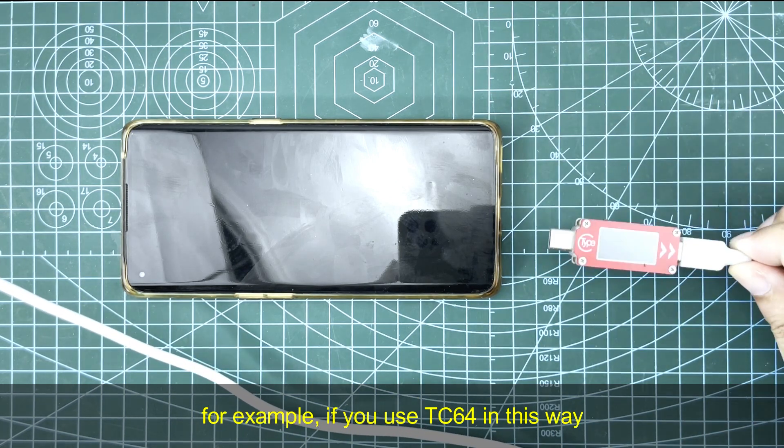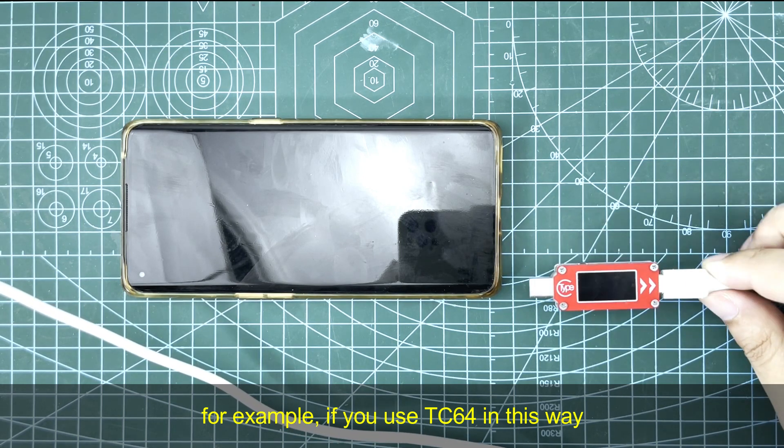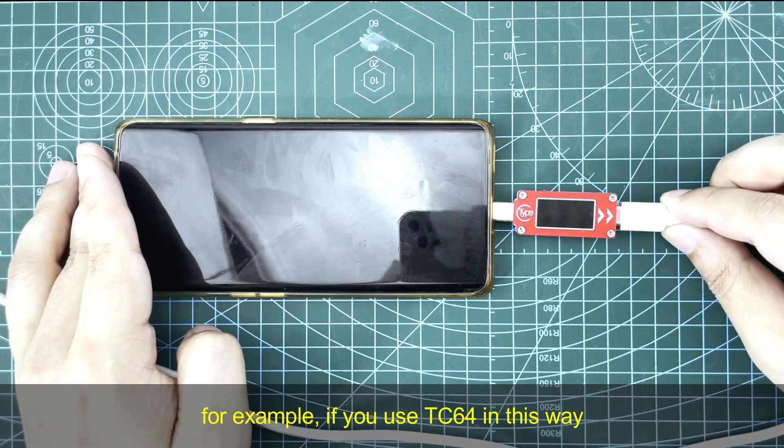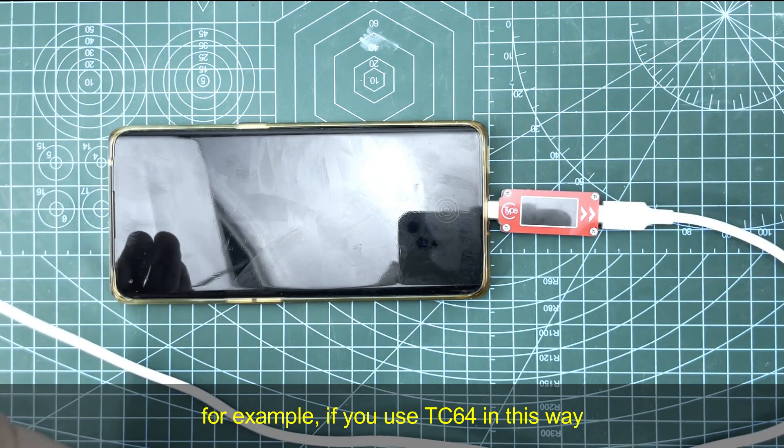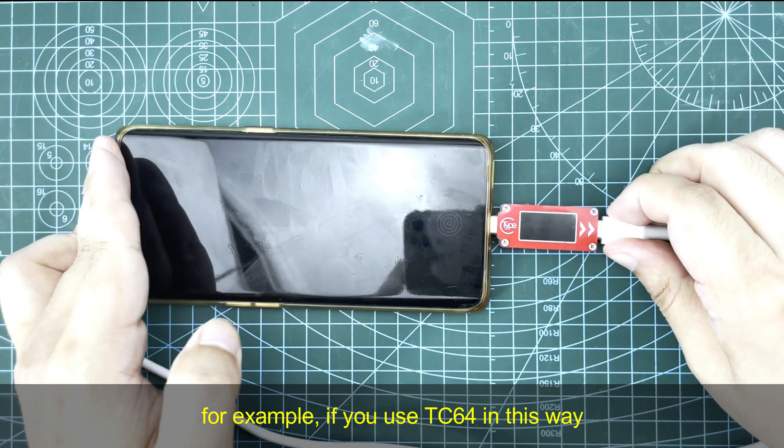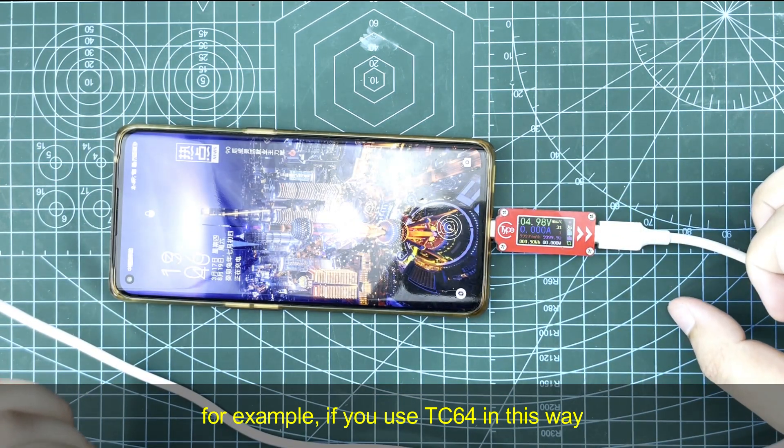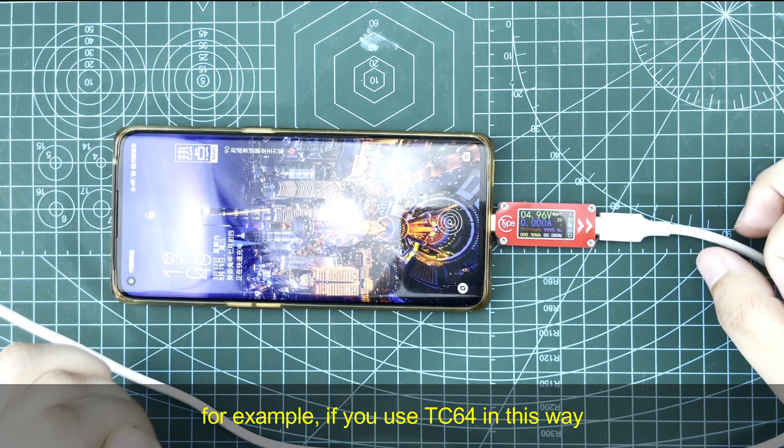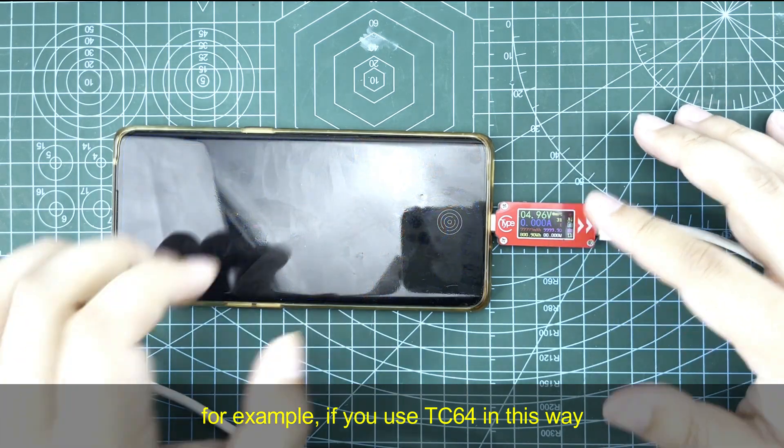For example, if you use TC64 in this way, some customers will use this way to charge the phone or laptop, and you'll find there's no current reading - it shows zero.